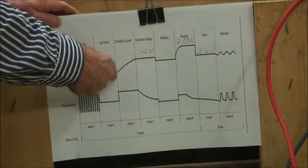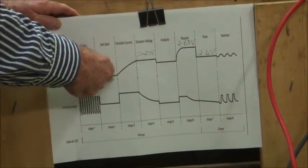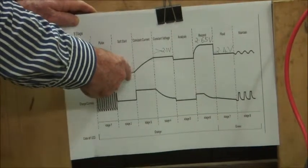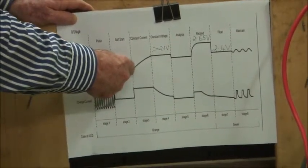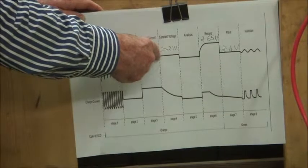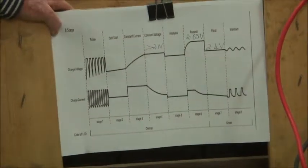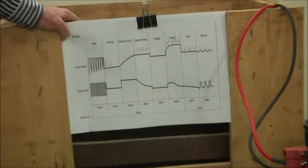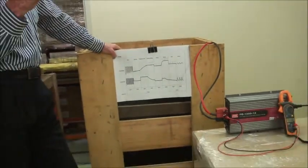It then goes into a soft start stage, which is just the beginning of the charge stage, but then it goes into constant current. So it will deliver as much current as possible in a constant current mode.